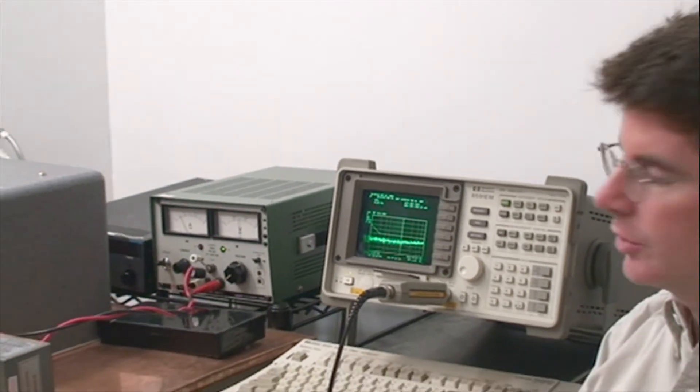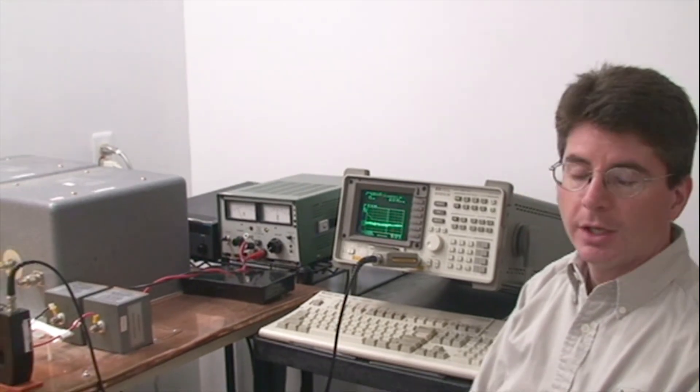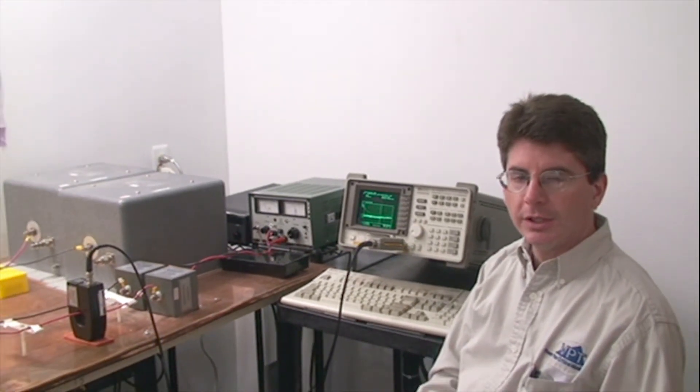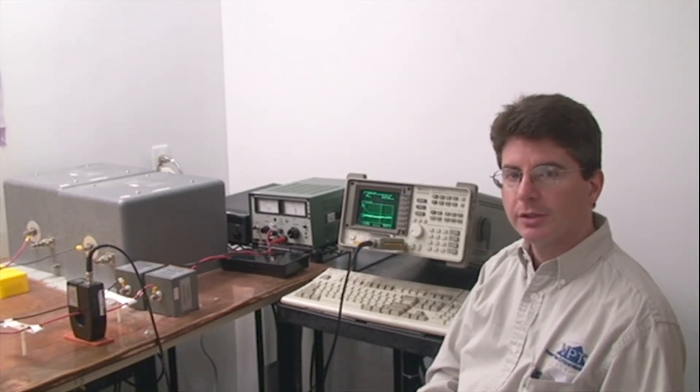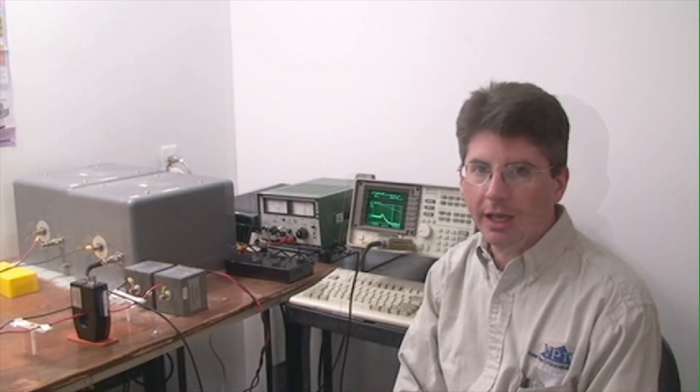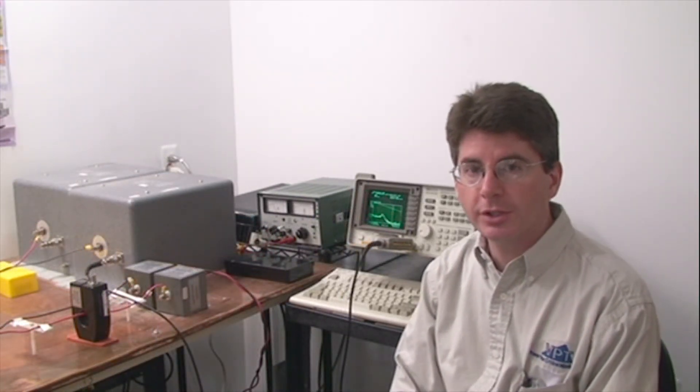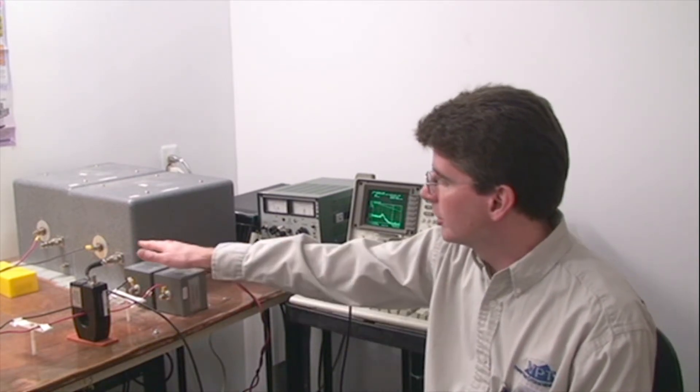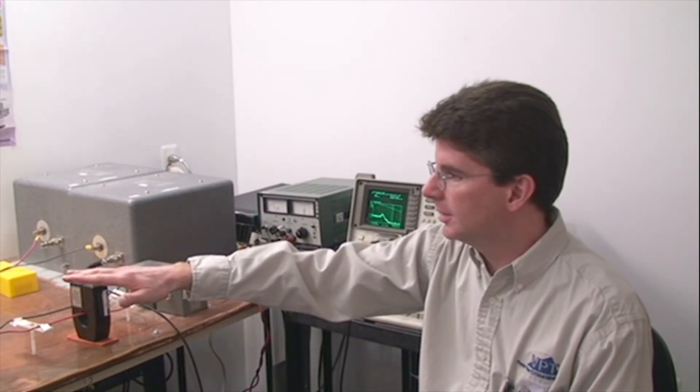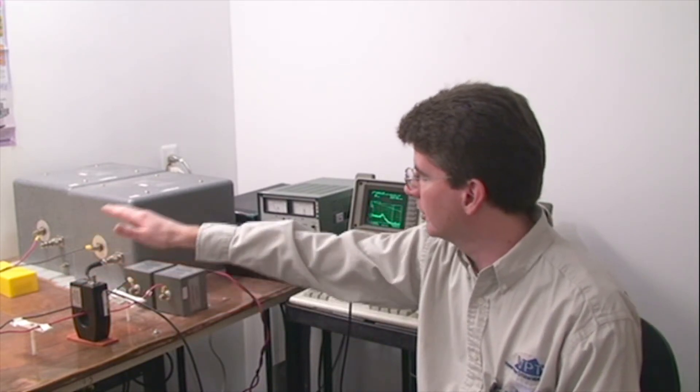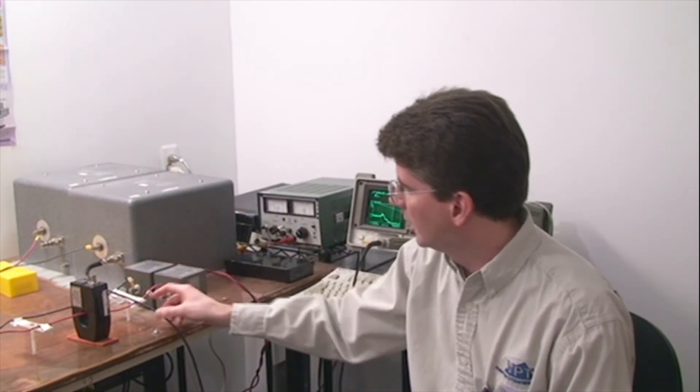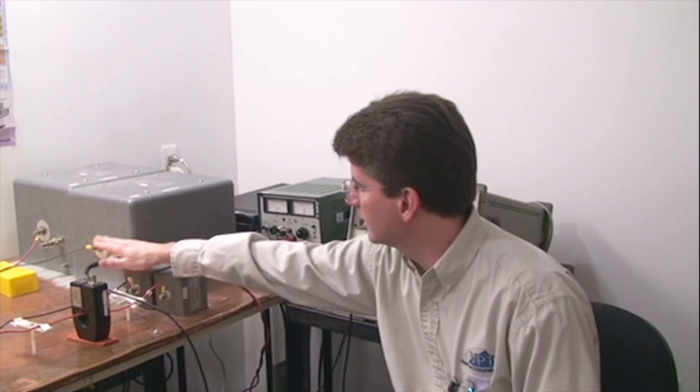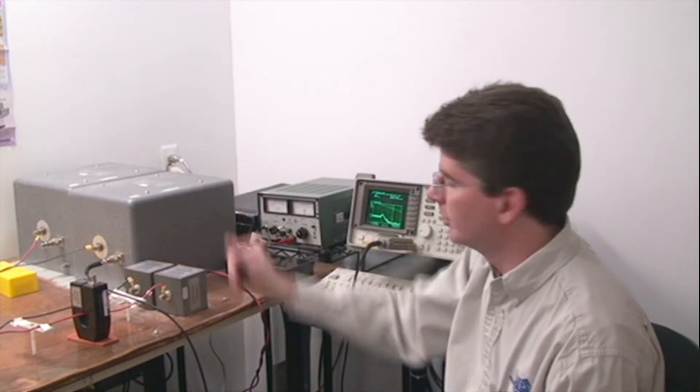Now we will change our setup over to MIL-STD-461DEF setup using the LISNs. So we've moved the DC-DC converter and EMI filter over to the LISN side. We've connected the EMI analyzer to the LISN. And we've also moved the power source.